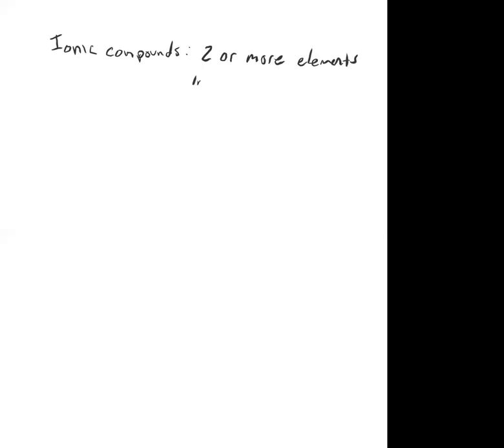Here's what happens if you take an ionic compound. The definition of an ionic compound is: it's a compound, so it has two or more elements in some fixed ratio. For example, sodium chloride — you can't have some of it with one sodium and two chlorines. The ratio one-to-one is what defines sodium chloride. So you have to have two elements, and ionic means it's composed of ions.